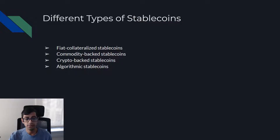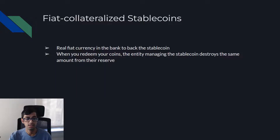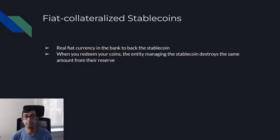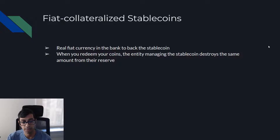There are a few different types of stablecoins: fiat collateralized stablecoins, commodity-backed stablecoins, crypto-backed stablecoins, and algorithmic stablecoins. With fiat collateralized stablecoins, there is real fiat currency in the bank to back that stablecoin — it's a one-to-one backing. That's how you achieve the one-to-one peg to typically the US dollar. When you redeem your coins, the entity managing the stablecoins destroys the same amount from the reserve.